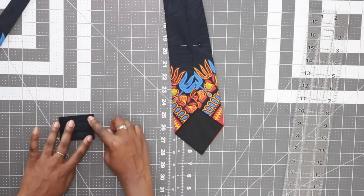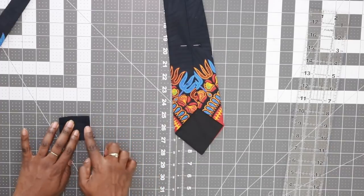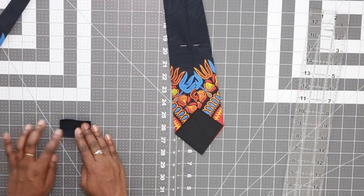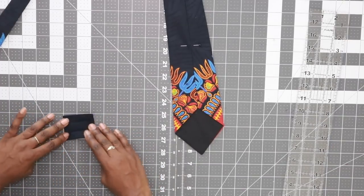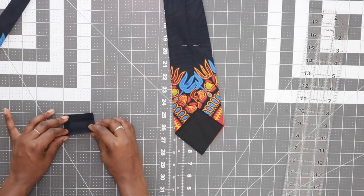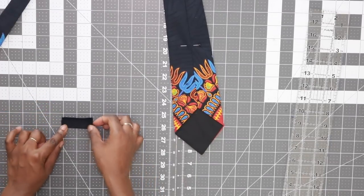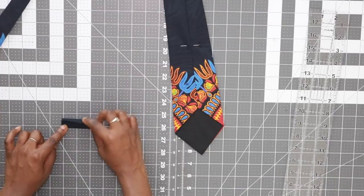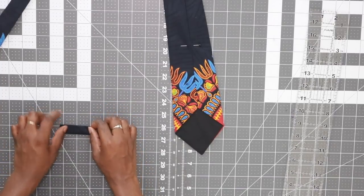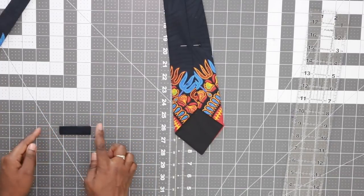I folded those both in, both edges in, about a half an inch. And then on the opposite side, I just went ahead and folded those in. And then this is what I have as a finished product.